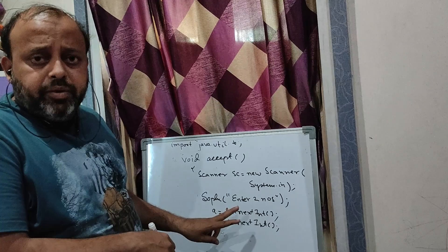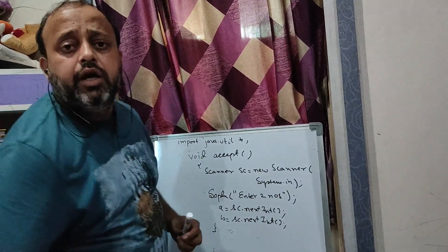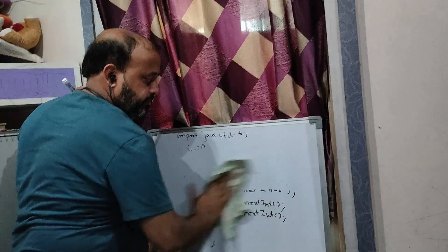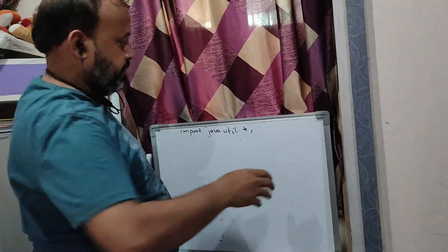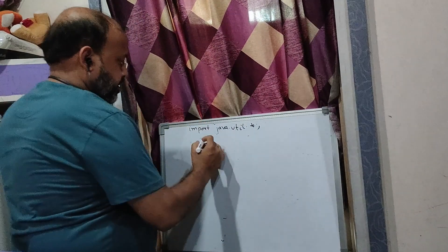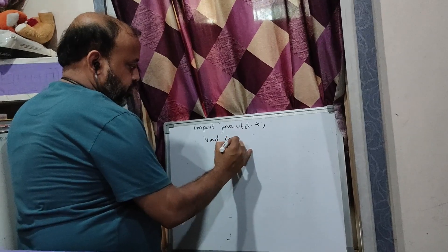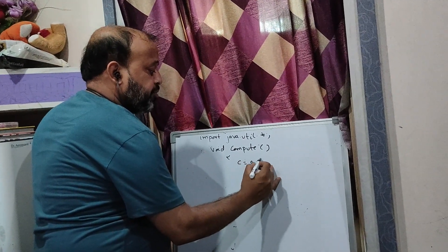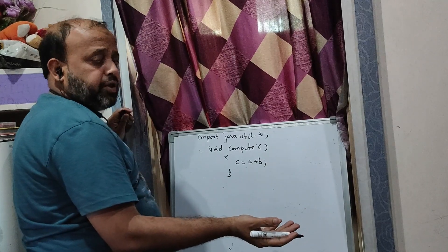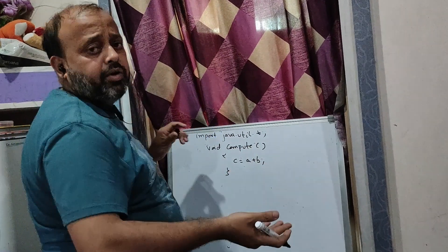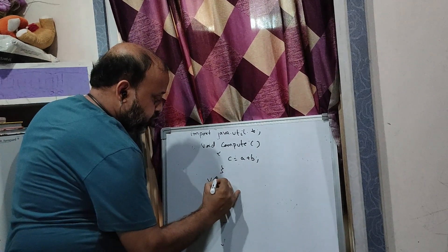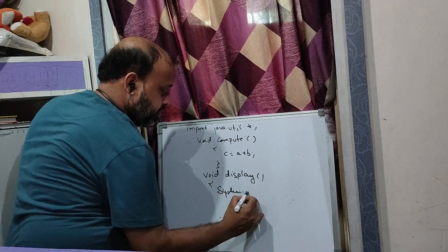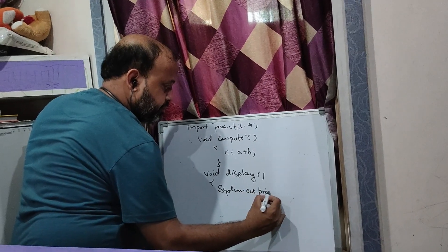After this I will use two more methods. In one method we will compute the sum, and in another method we will display the result. For void compute(), it simply adds the numbers — c = a + b. In your question you can have some if-else or sorting logic as well. For void display(), just print using System.out.println to show the result.